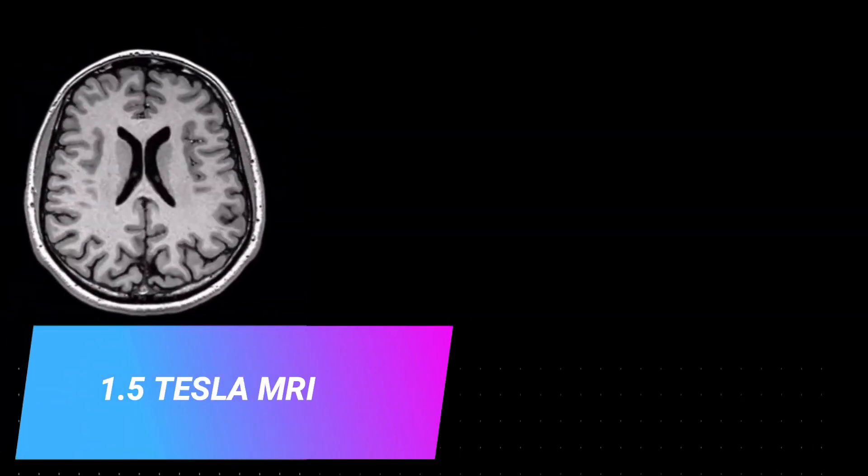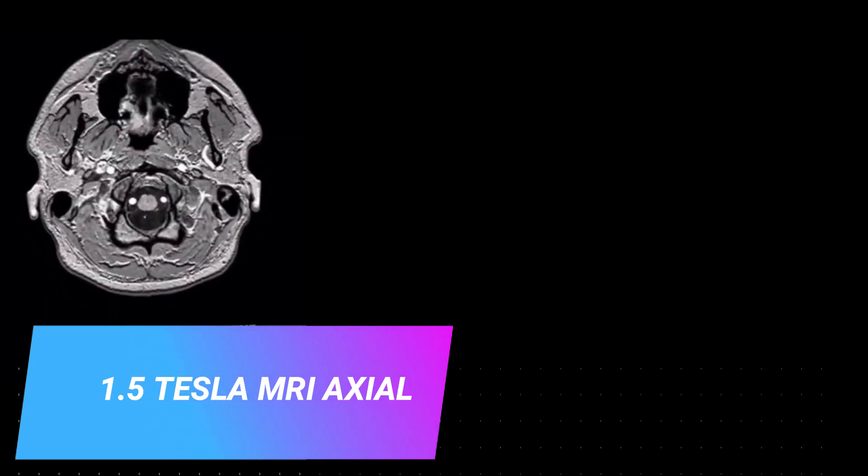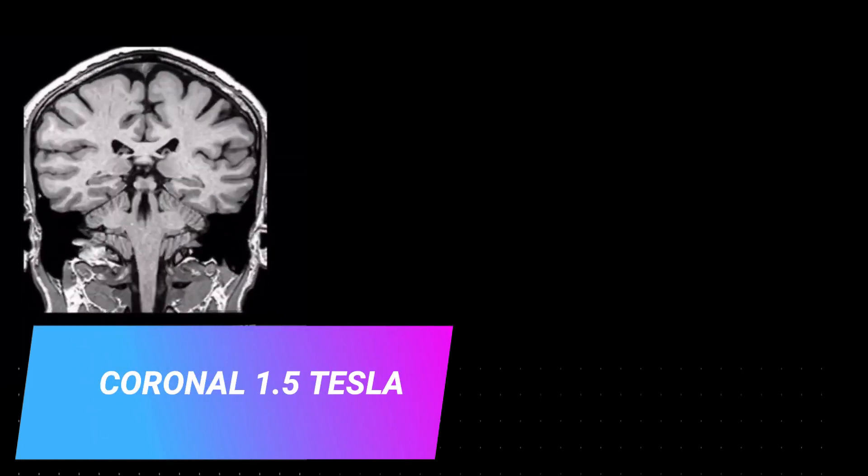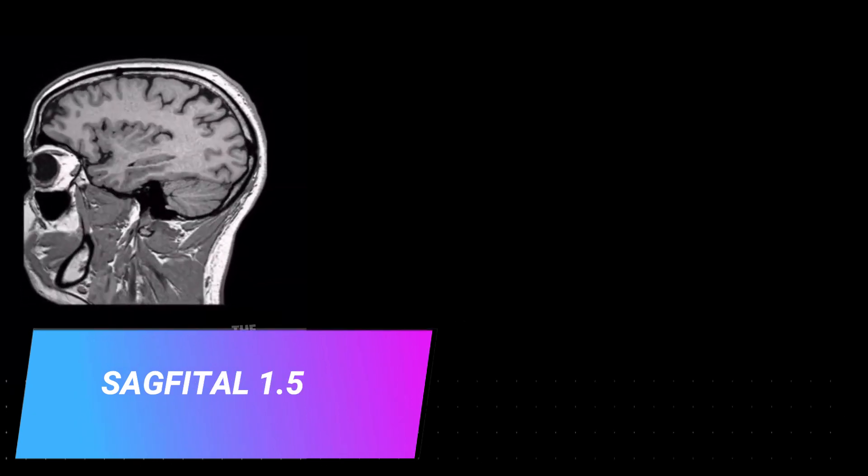It's a 1.5 Tesla MRI axial cut. This is the quality of 1.5, I'm just making you simply understand. This is coronal, now finishing the coronal 1.5 Tesla cut. Now let's go for the next one - sagittal. As we know there are three basic planes. Now if we go for sagittal, this is 1.5 Tesla. Now let me show you the clarity of the seven Tesla.